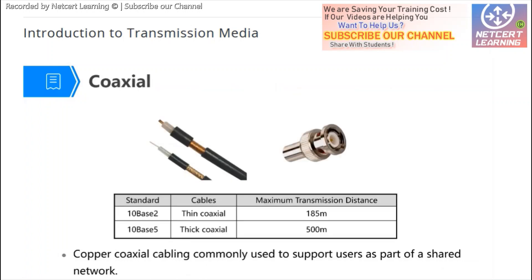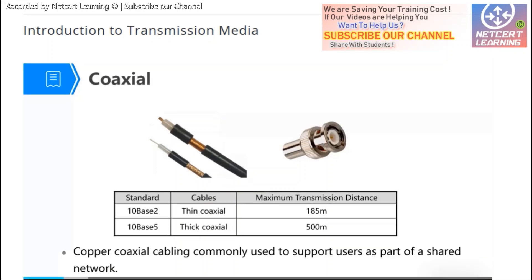This is a coaxial cable. We can see in this picture there are two types of cables. One is called 10-base-2 and another is called 10-base-5. The 10-base-2 has a small diameter, and the 10-base-5 has a bigger diameter. The 10-base-2 we usually call thin coaxial.